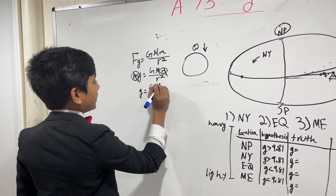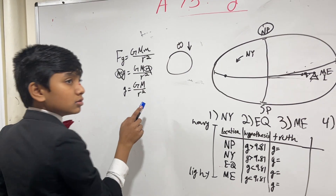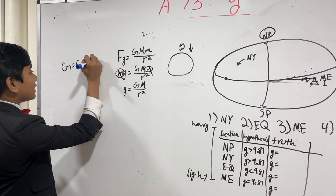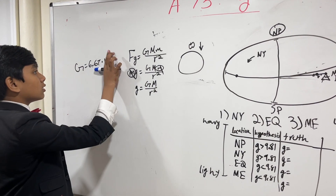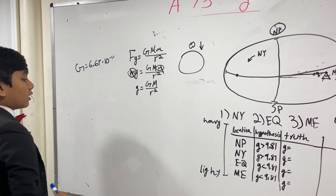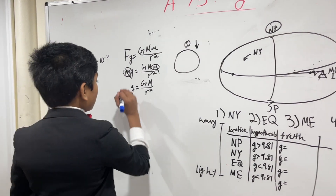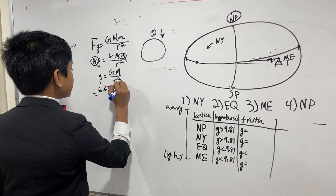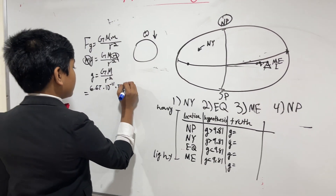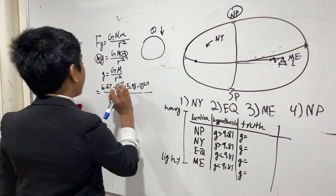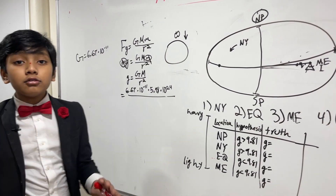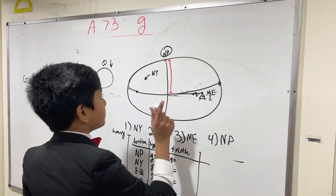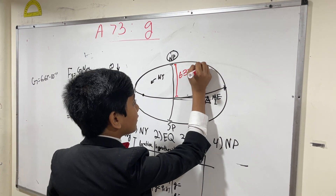Let's plug into this equation. These two are obviously constants. G is the gravitational constant, approximately equal to 6.67 × 10⁻¹¹. And we've got 6.67 × 10⁻¹¹ times 5.98 × 10²⁴, divided by R squared. Now, the distance from the North Pole to the center of the Earth is about 6,356,072 meters.